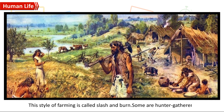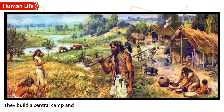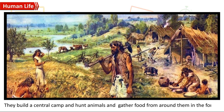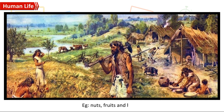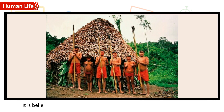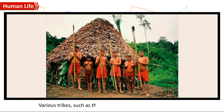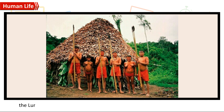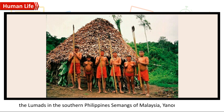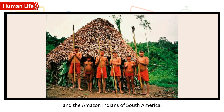Some are hunter-gatherers who build a central camp and hunt animals and gather food from around them in the forest, such as nuts, fruits, and honey. It is believed that there are over 50 million natives who live in the rainforests. Various tribes include the Bajamis and Bantus in Central Africa, the Lumads in the Southern Philippines, the Simangs of Malaysia, the Yanomami of Brazil, and the Amazon Indians of South America.